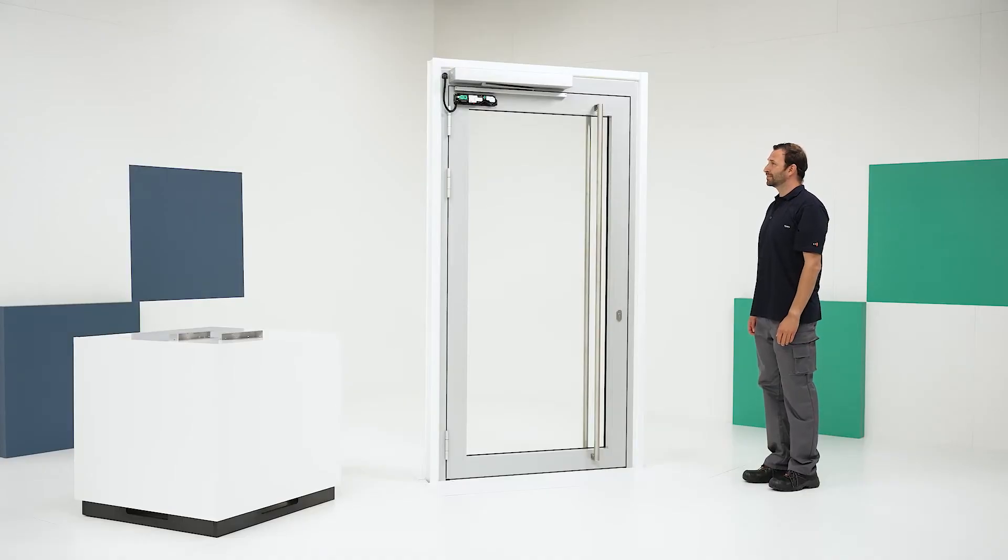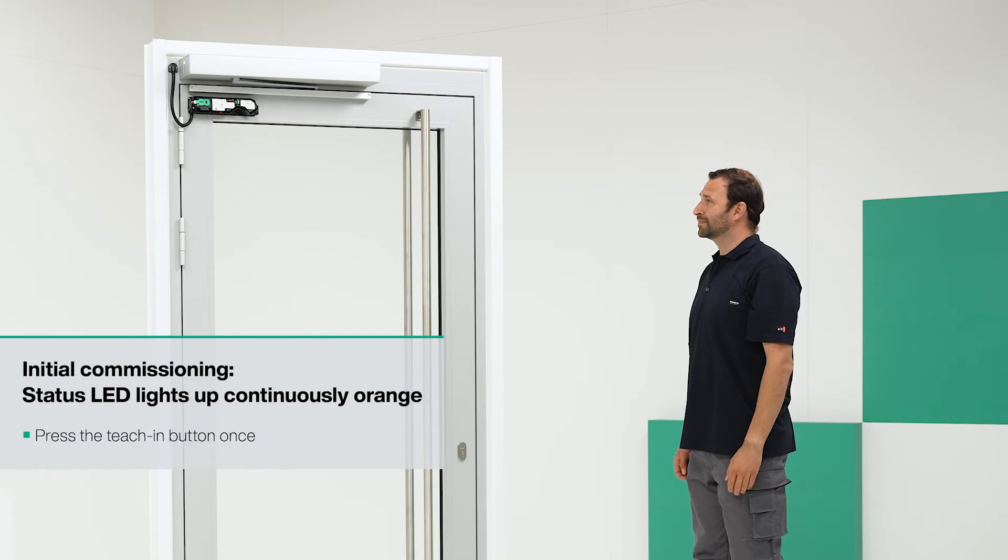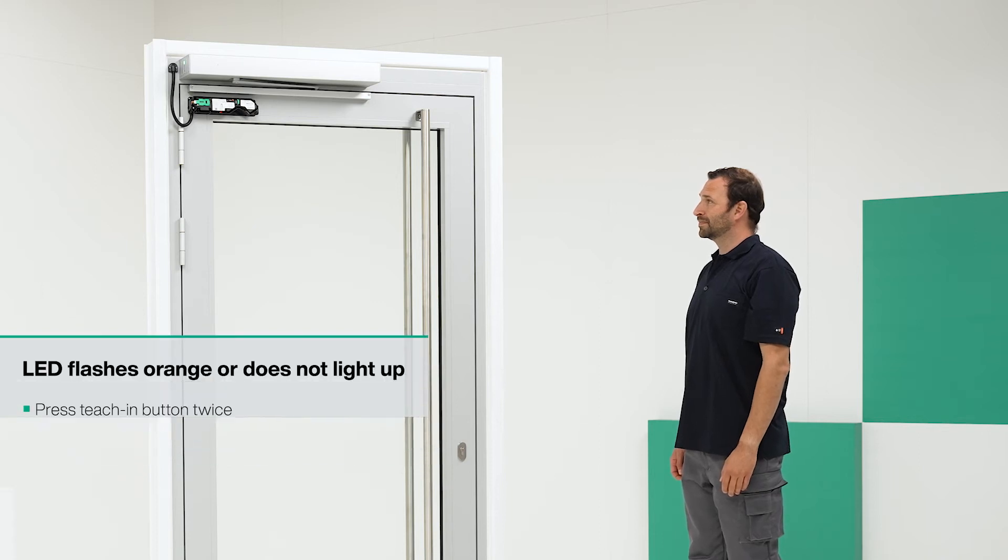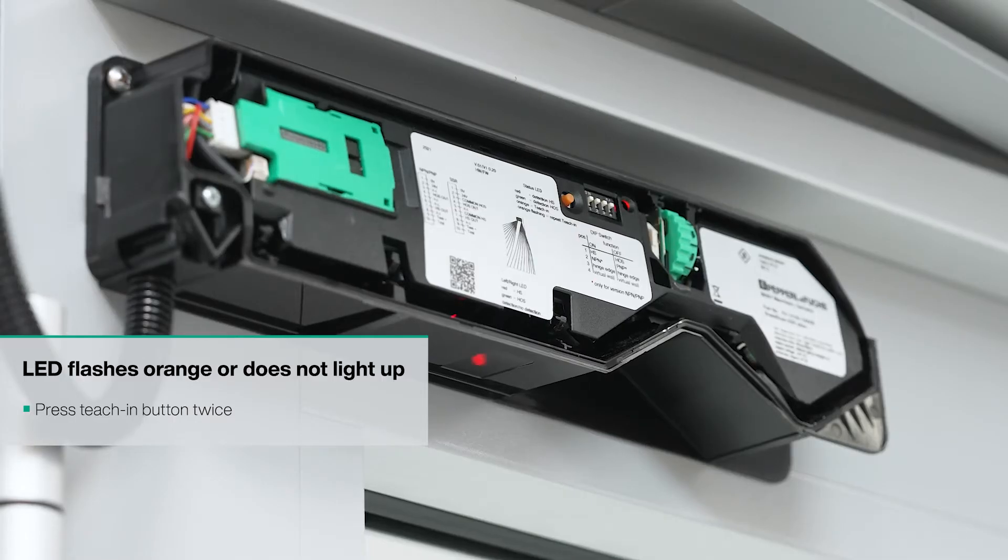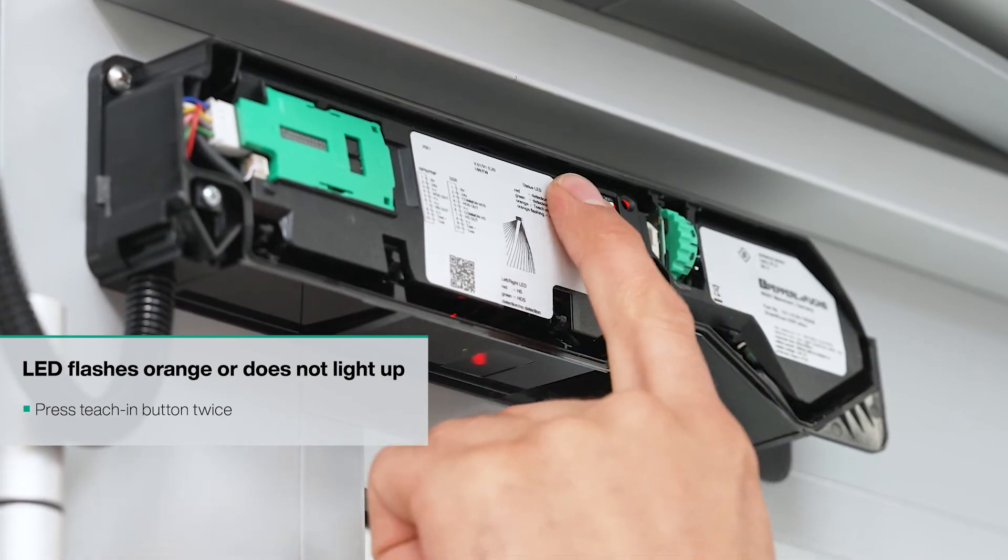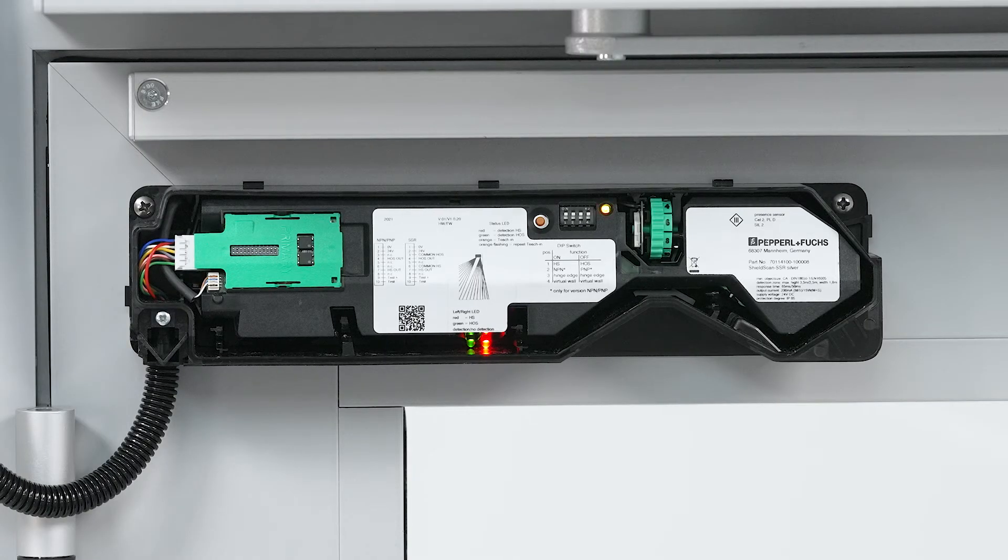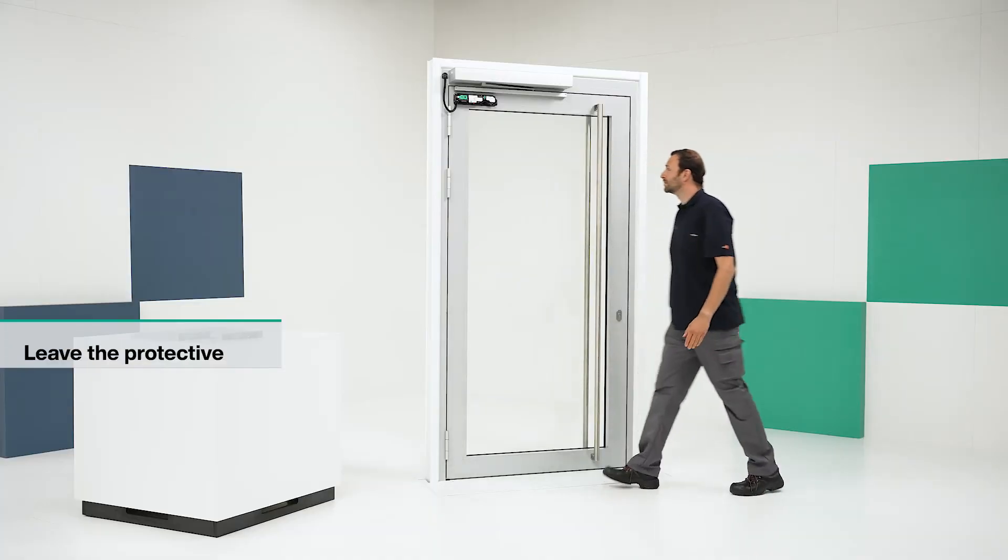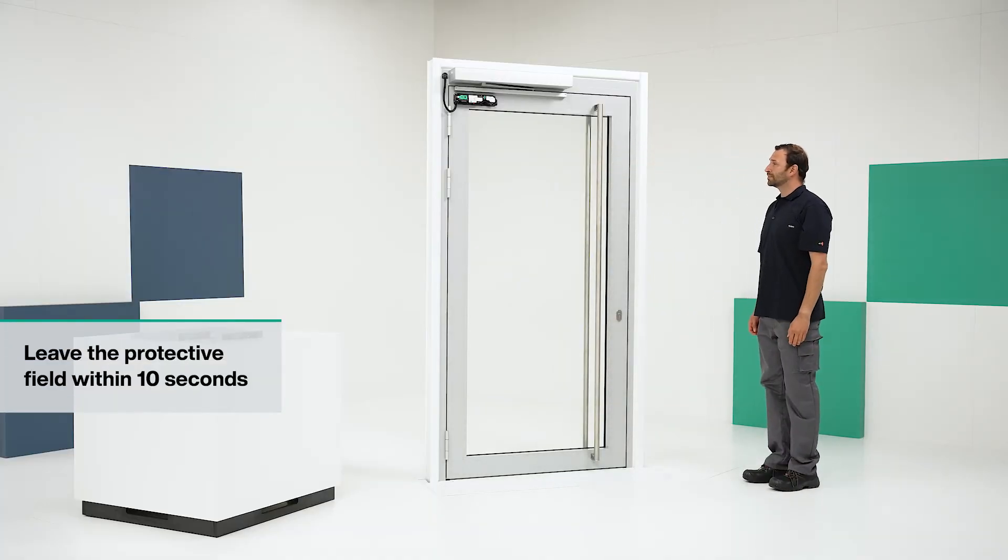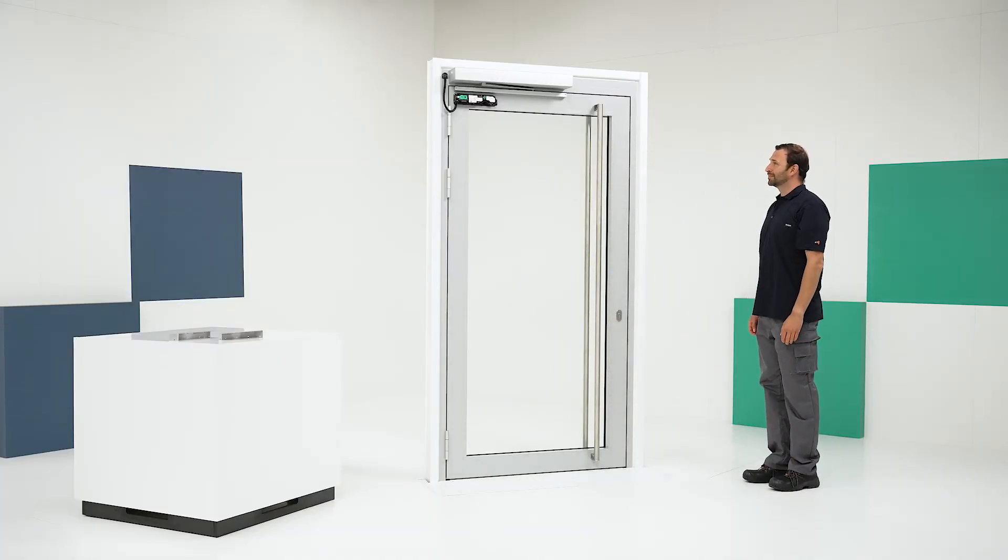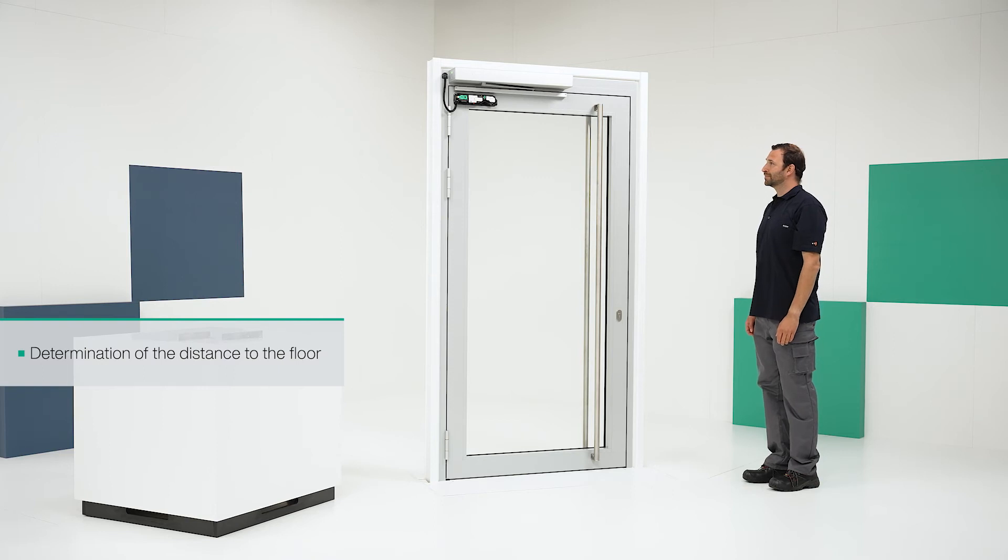If this is the initial commissioning of the shield scan, the status LED lights up continuously orange. In this case, press the teach-in button once. If the LED flashes orange or does not light up, press the teach-in button twice. The status LED will now begin to flash green and red alternately. Once this happens, leave the protection field within 10 seconds so that the sensor can automatically determine the distance to the ground.